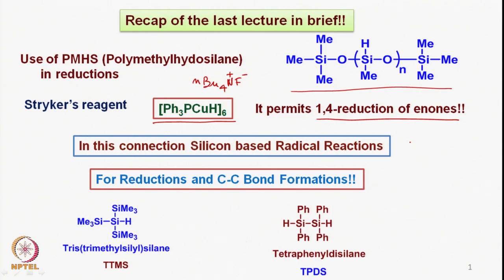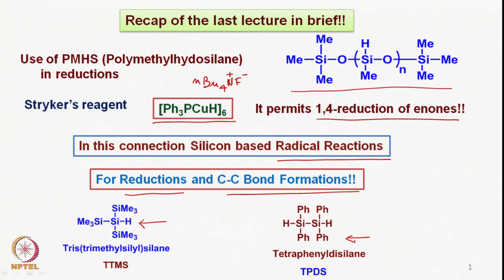We also looked at silicon-based radical reactions. In that context, we saw both reductions using silane-based reagents and C–C bond formations using radical-based chemistry. We introduced tris(trimethylsilyl)silane (TTMS), a sterically hindered hydrogen-containing silane, and also tetraphenyldisilane, which is a very nice reducing agent that also allows C–C bond formation.